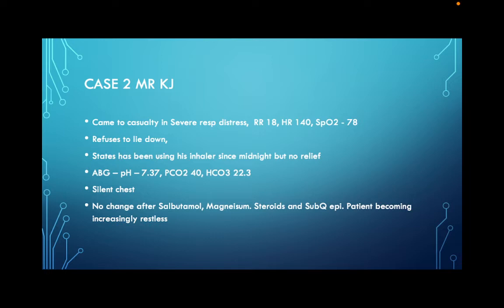We throw everything at him: continuous salbutamol, magnesium, steroids, even subcutaneous epinephrine. He's becoming increasingly restless and agitated. X-ray shows super hyperinflation. His stats are starting to drop, he's getting confused, and keeps pulling his oxygen mask off. I said never intubate an asthmatic, but this one needs to be intubated.